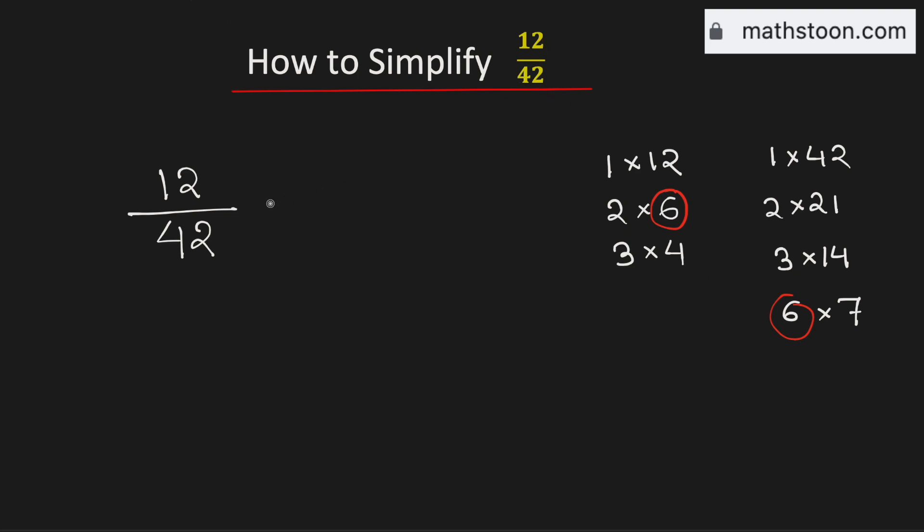So to simplify this fraction, we need to divide both the numbers by their greatest common factor which is 6. And by doing so, we will get 2 in the numerator and 7 in the denominator.